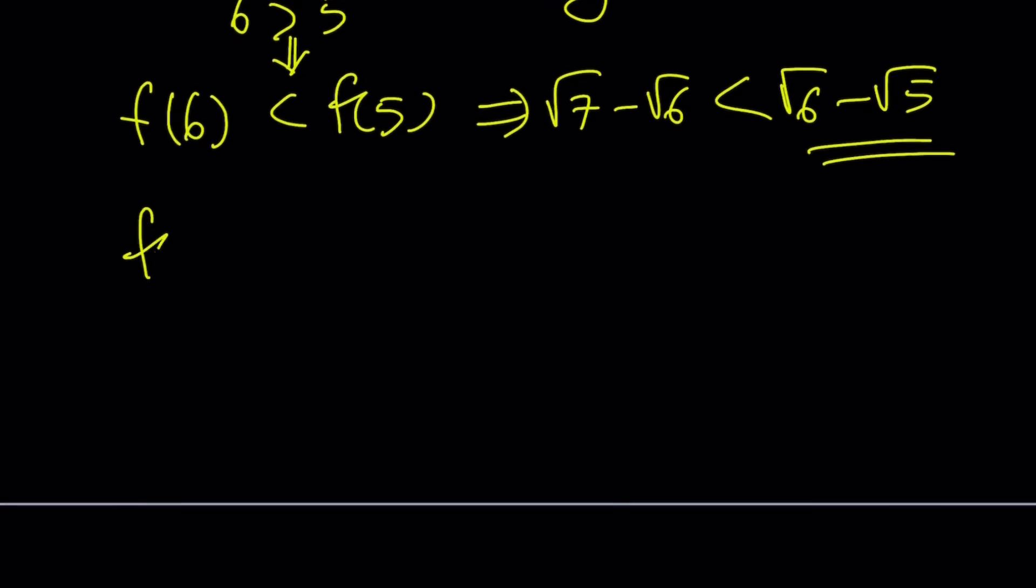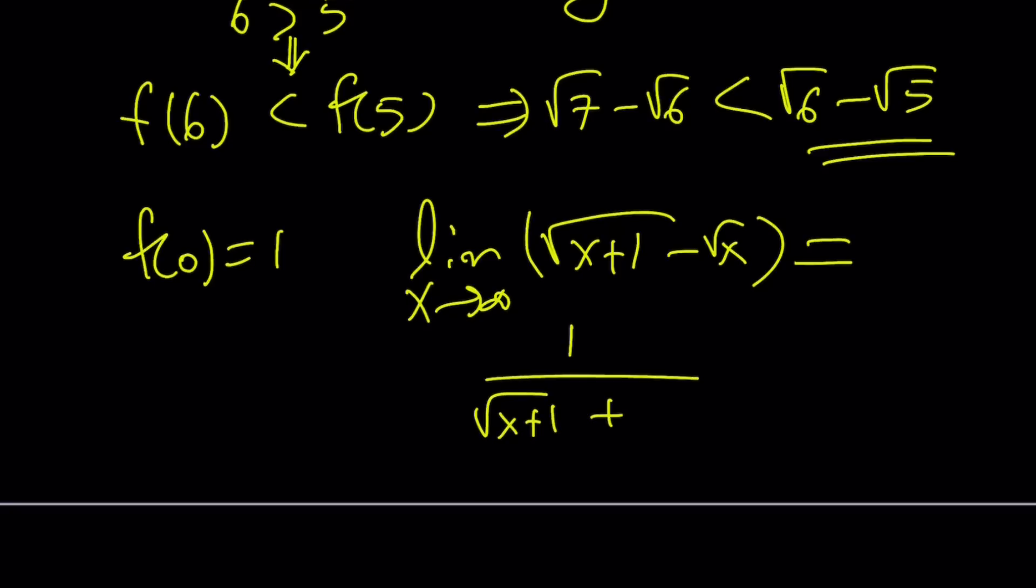And of course, there's other facts such as f of 0 is 1 and limit as x approaches infinity of square root of x plus 1 minus the square root of x is 0. Well, it is 0 because if you think about it you can write it as 1 over the square root of x plus 1 plus the square root of x and as x approaches infinity this is going to approach 0. So, we have a function that is 1 at 0 and it's decreasing and it's approaching the x-axis. So, the x-axis is a horizontal asymptote.